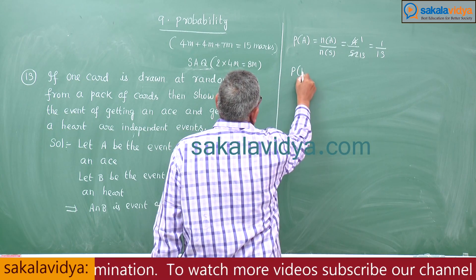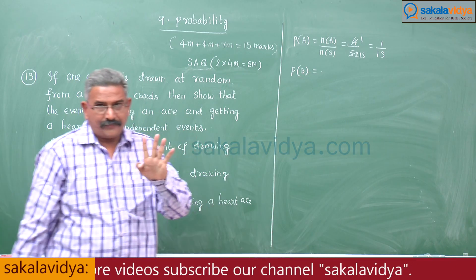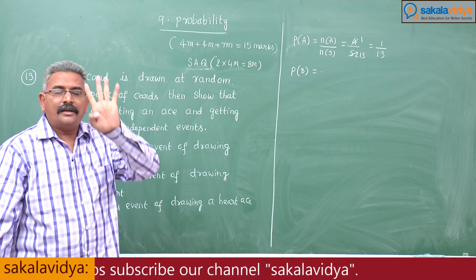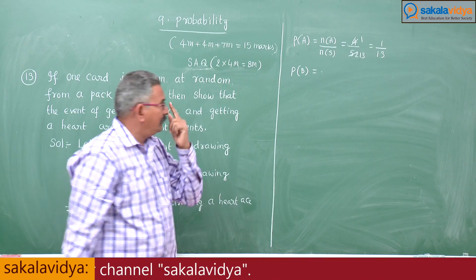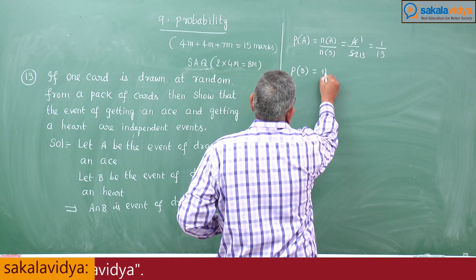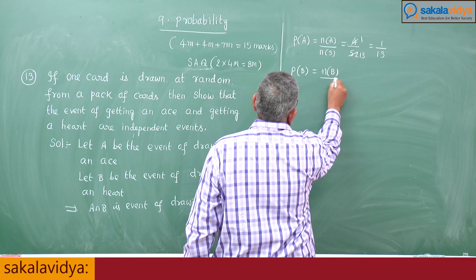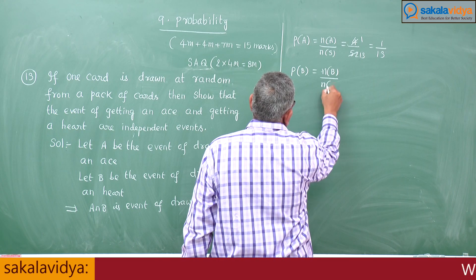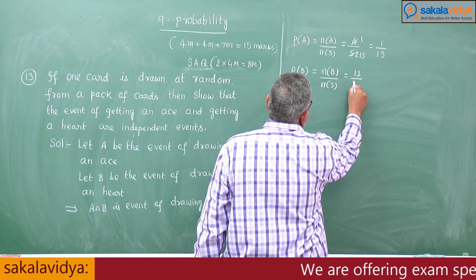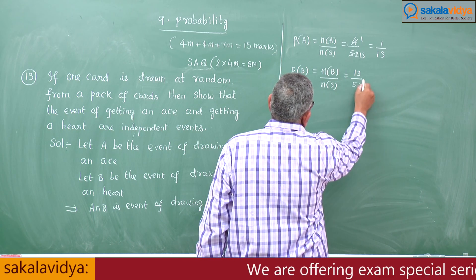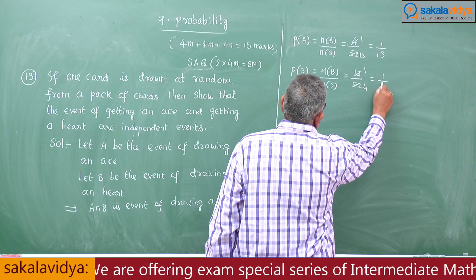Now, P of B — hearts. How many hearts are there? There are 13 hearts. So, N of B by N of S is 13 by 52, which simplifies to 1 by 4.